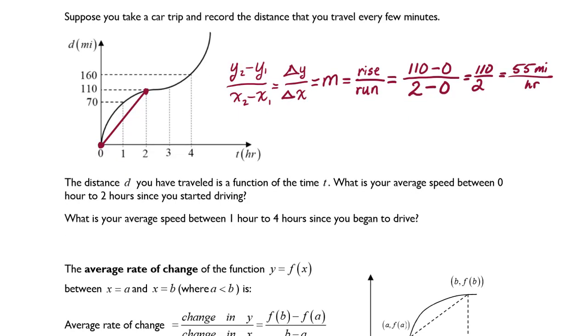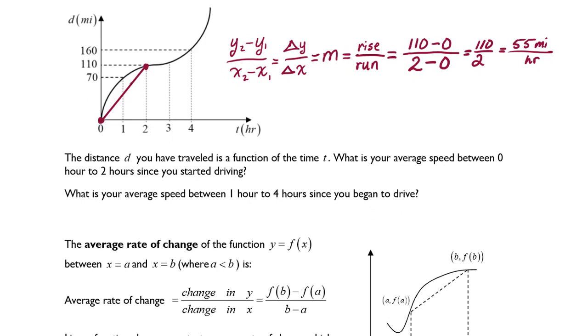Notice that my average rate of change became a linear rate, meaning that we basically simplified our data to show an average rate over 2 hours.